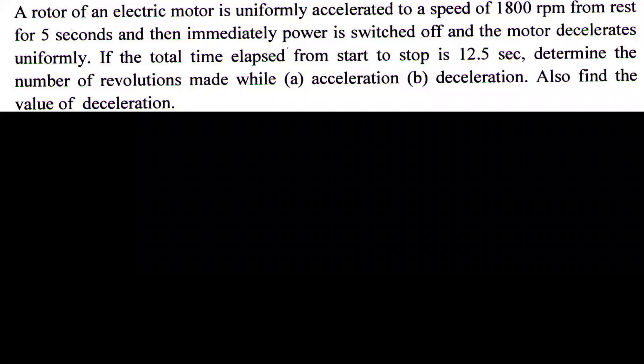The rotor of an electric motor is uniformly accelerated to a speed of 1800 rpm from rest in 5 seconds, and then immediately power is switched off and the motor decelerates uniformly. If the total time elapsed from start to stop is 12.5 seconds, determine the number of revolutions made during acceleration and deceleration, and also find the value of deceleration.